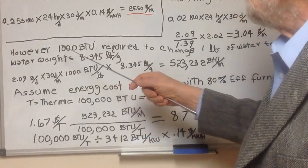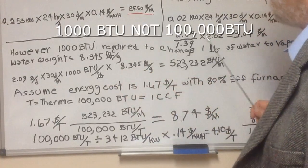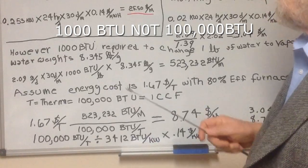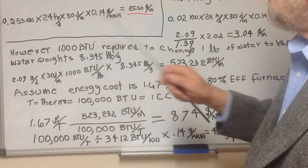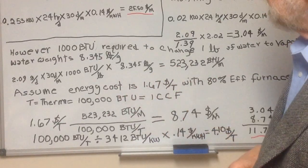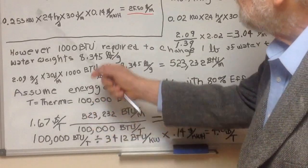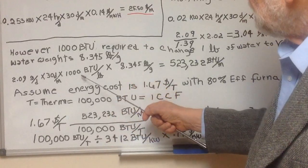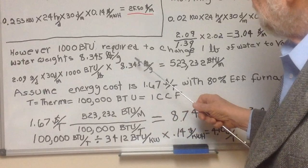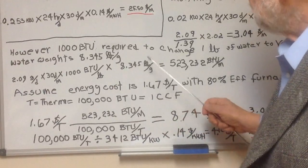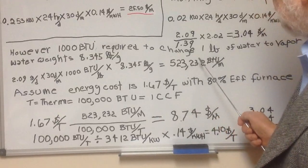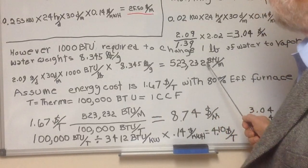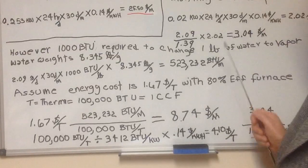But this is not the total cost. It's important to realize that 100,000 BTUs are required to change one pound of water to vapor. Water weighs 8.34 pounds per gallon. So at 2.09 gallons per day times 30 days, times 1,000 BTUs per pound, times 8.345 pounds per gallon, you come up with 523,232 BTUs per month. Where does that heat come from? It has to come out of the air in your house.